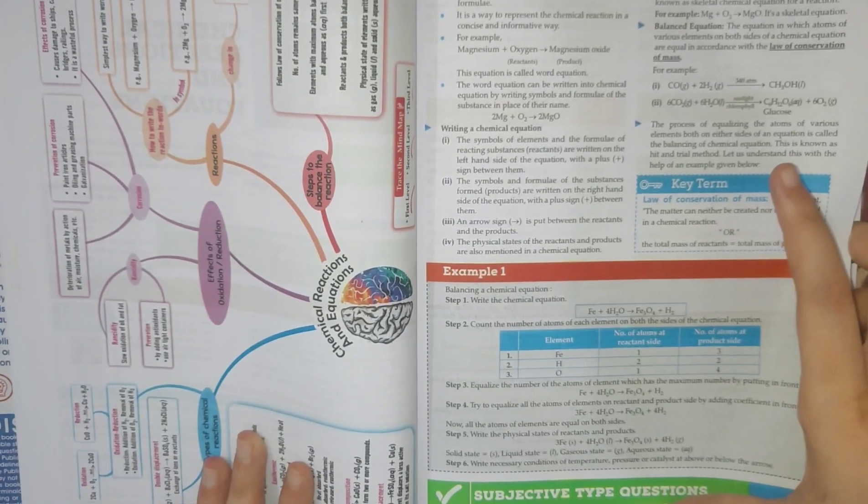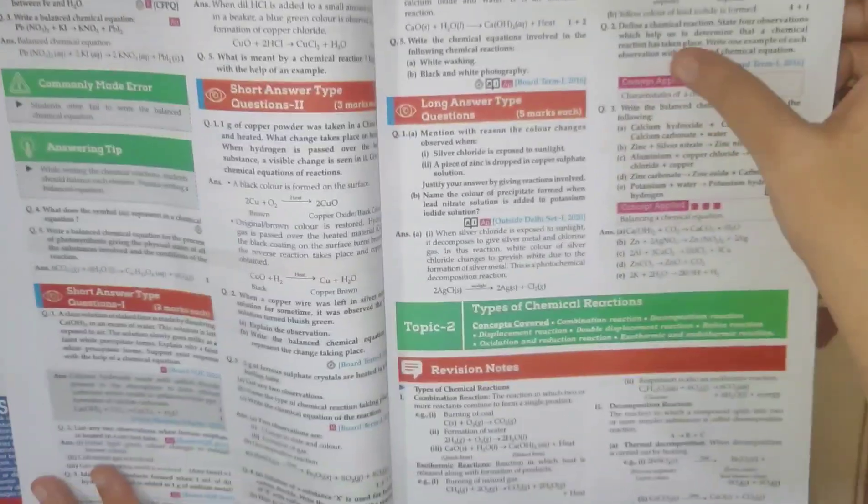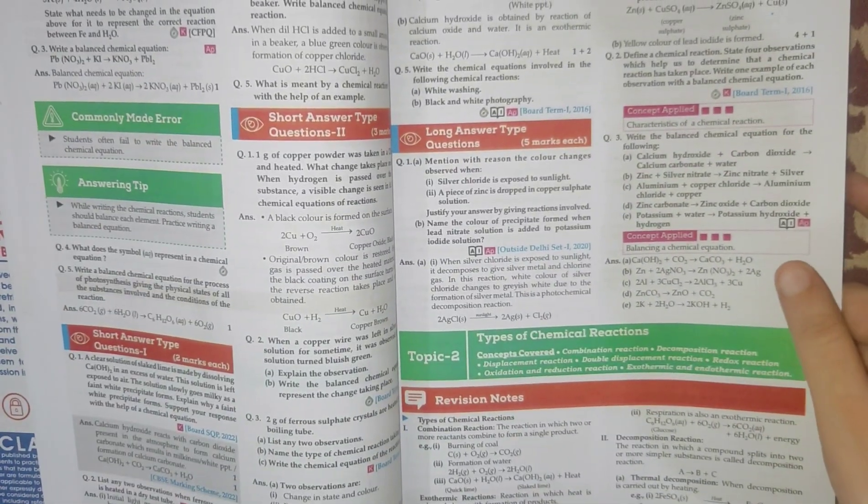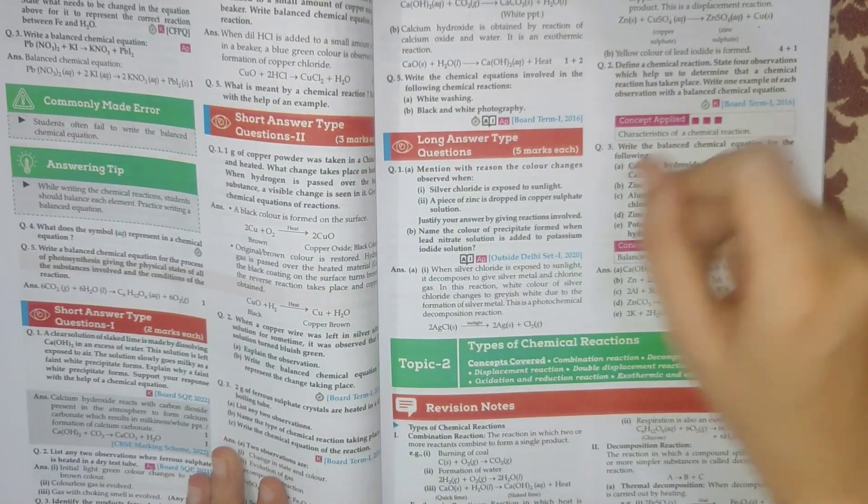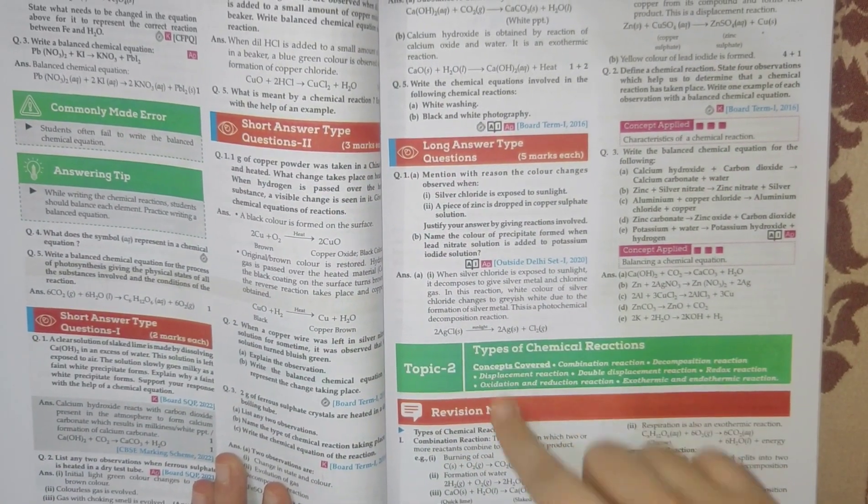notes for each topic, then certain examples, then subjective type questions. You have very short answer type questions, and they'll also tell you some commonly made errors that students make. Then short answers and long answers - they'll also tell you the concepts applied while solving these questions, which is very important because you'll be doing the questions and understanding what you have done. Then topic number two will